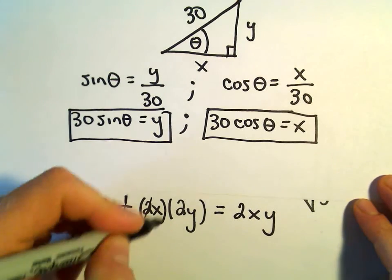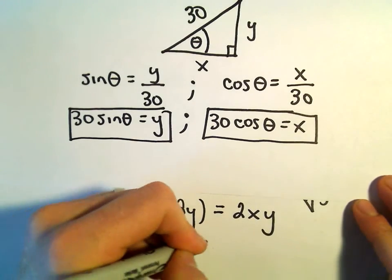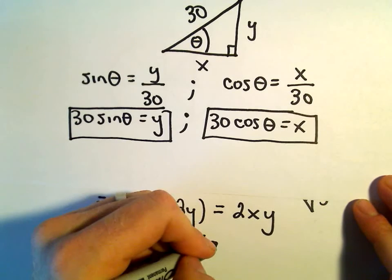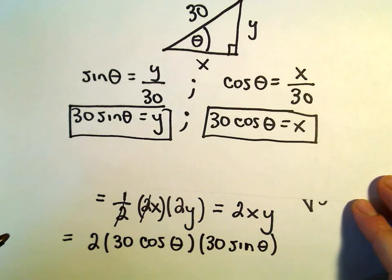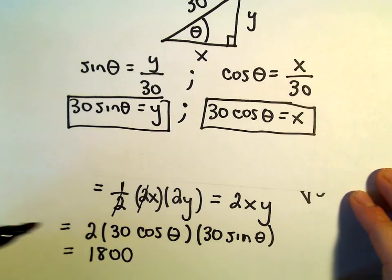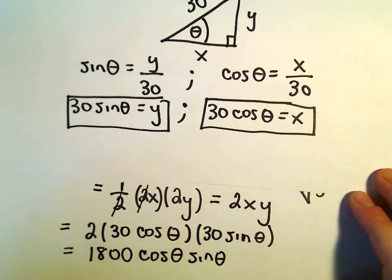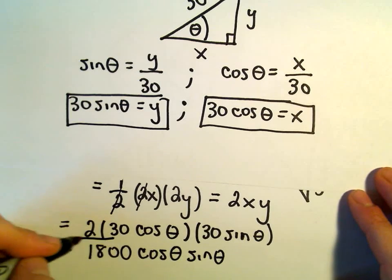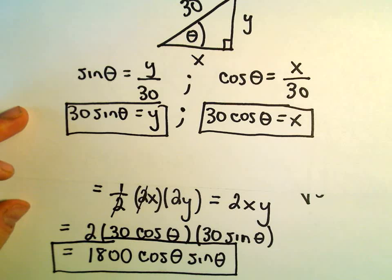But, again, we said that x, in terms of theta, is going to be 30 times cosine theta. We said that y is going to be 30 times sine of theta. Well, let's see. 30 times 30 is going to be 900. 900 times 2 is going to be 1,800. So, it looks like we get 1,800 times cosine theta, times sine theta. And that would be an expression for the area of that triangle, all in terms of the angle theta.